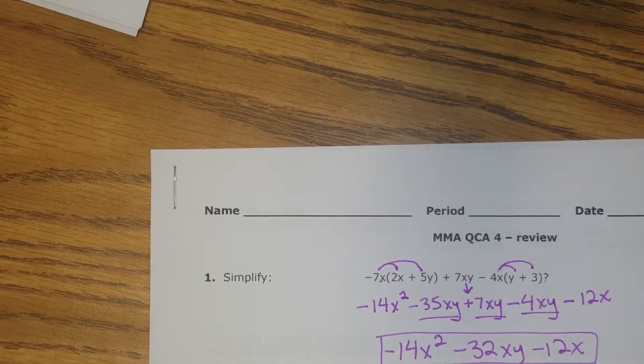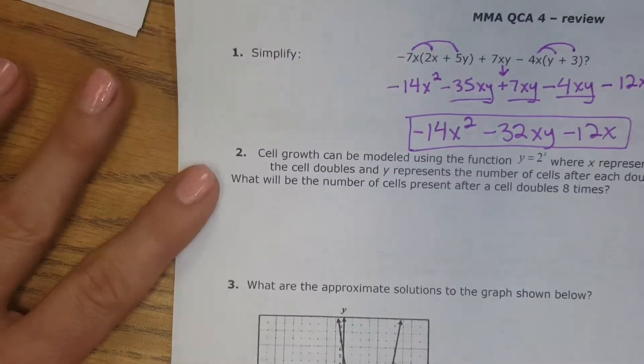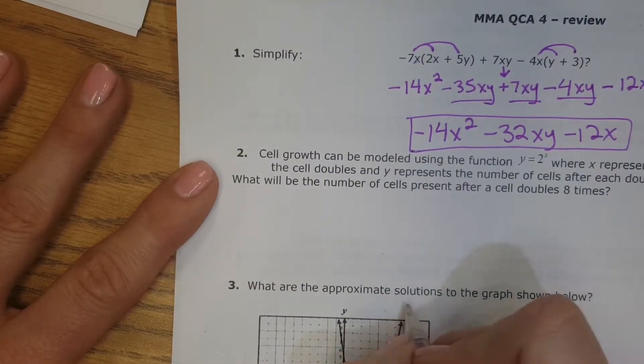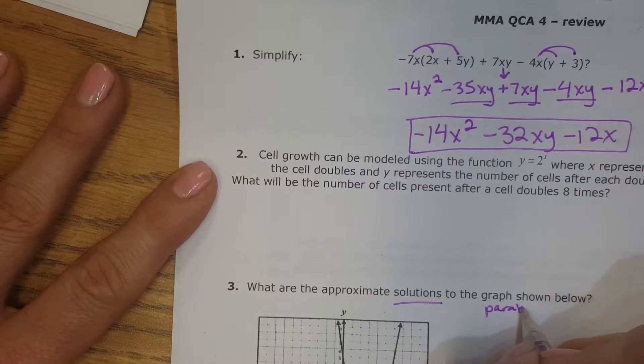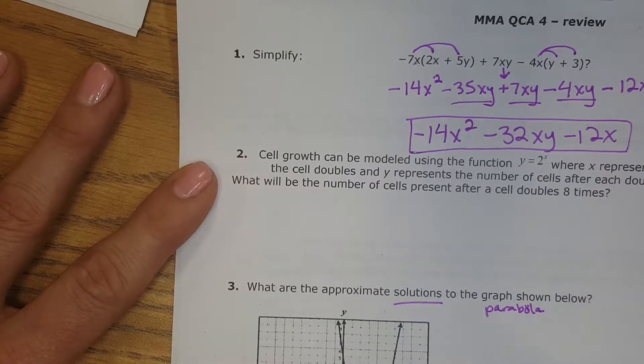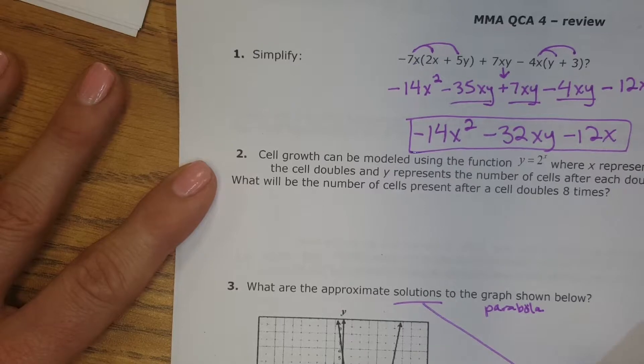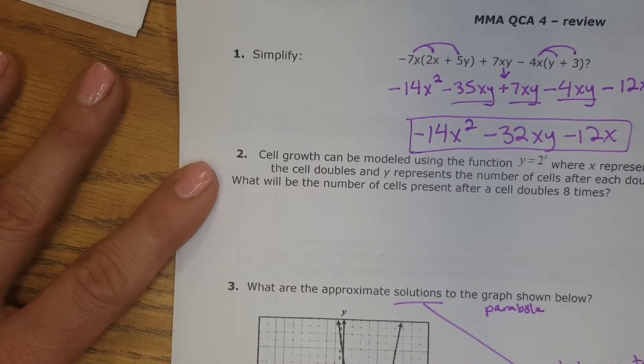Number 2 I already did with you in the other video. So we're going to skip down to number 3. It says, what are the approximate solutions to the graph? This graph is a parabola, which means it's a quadratic. And so the solutions are the x-intercept, or the roots, or the zeros. Those all mean the same thing.